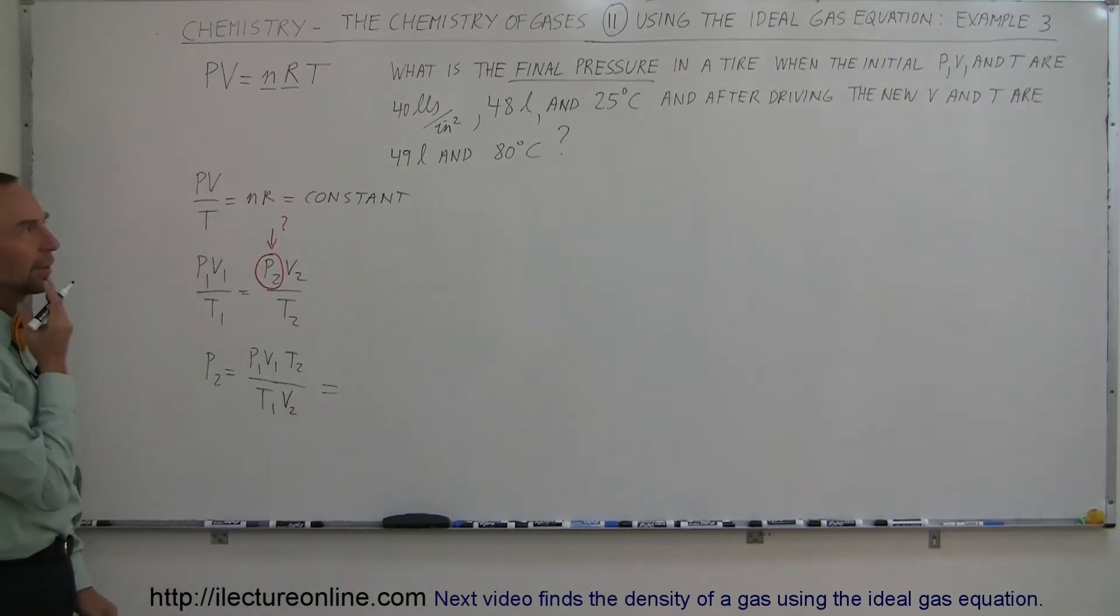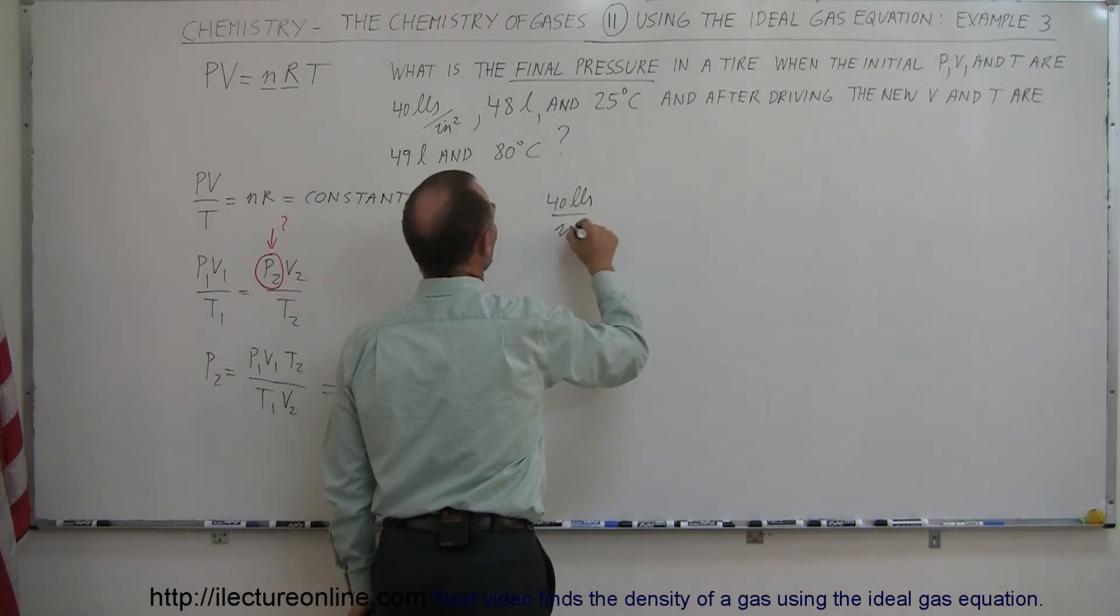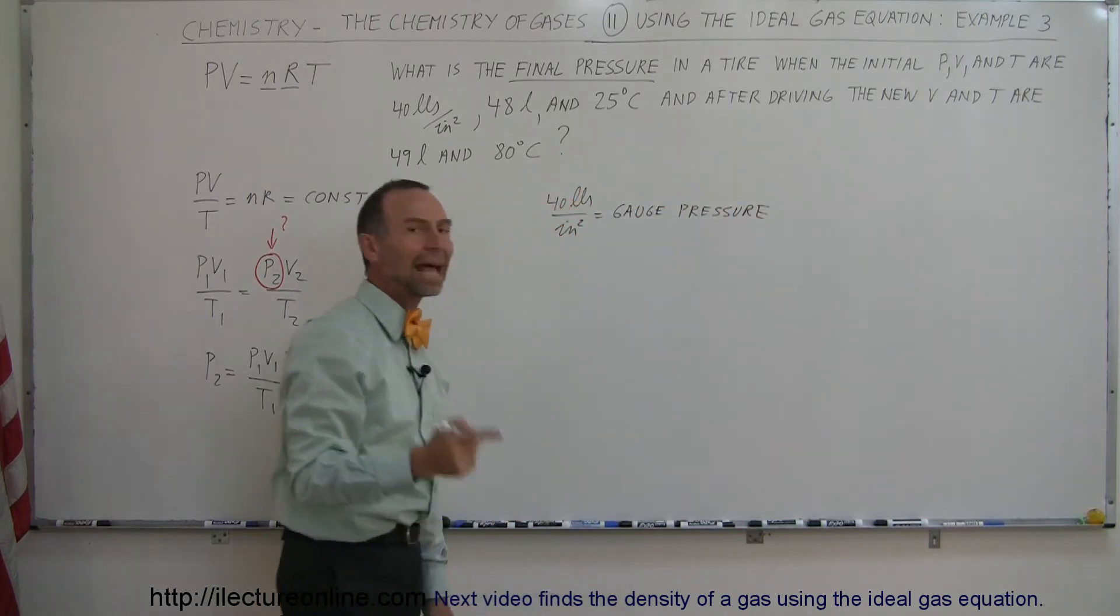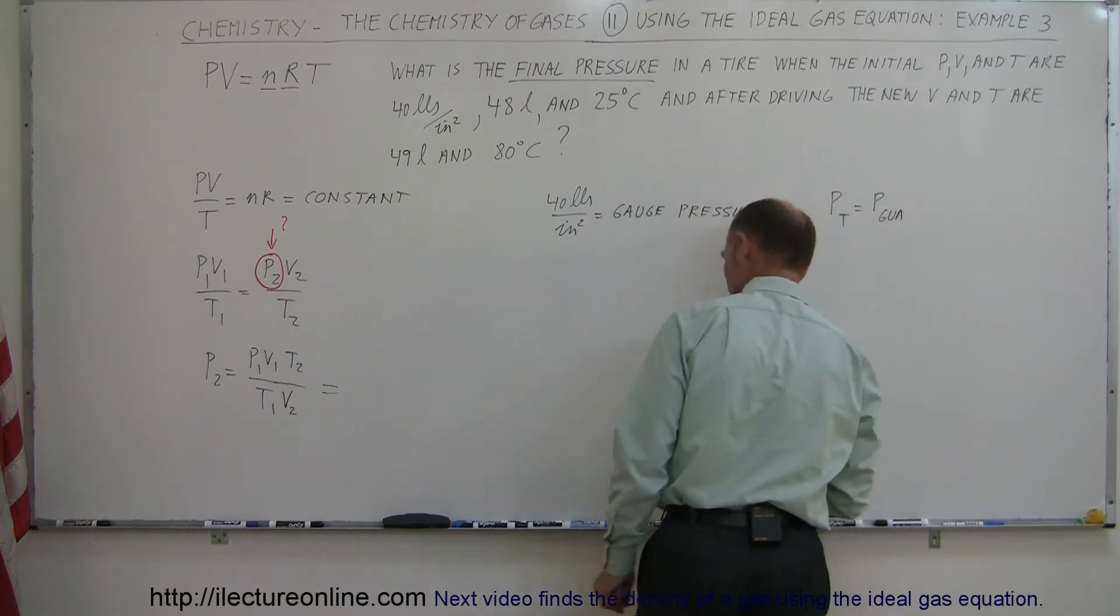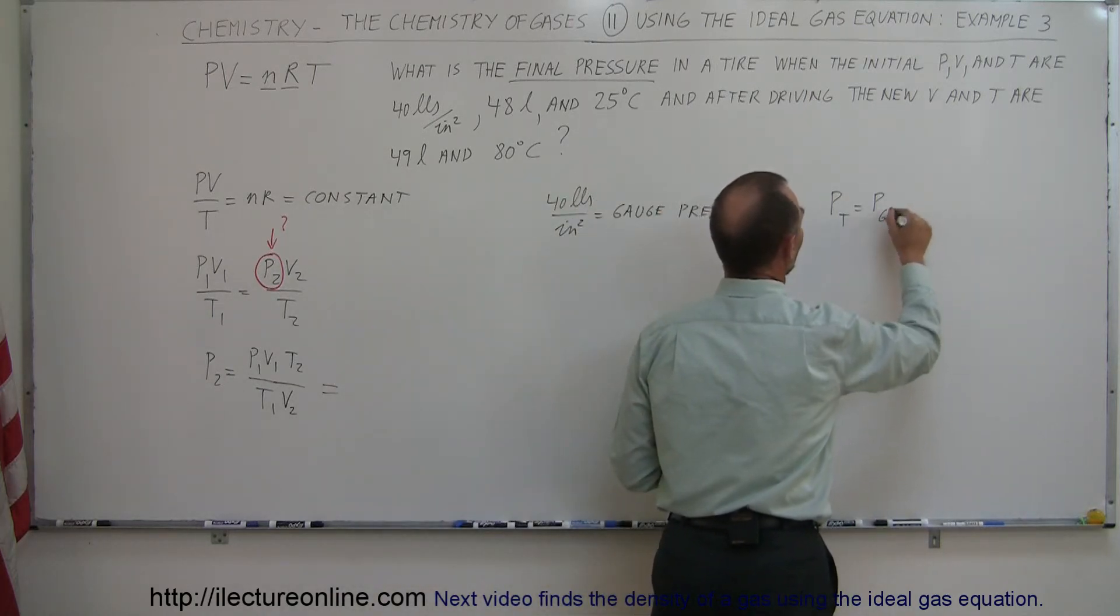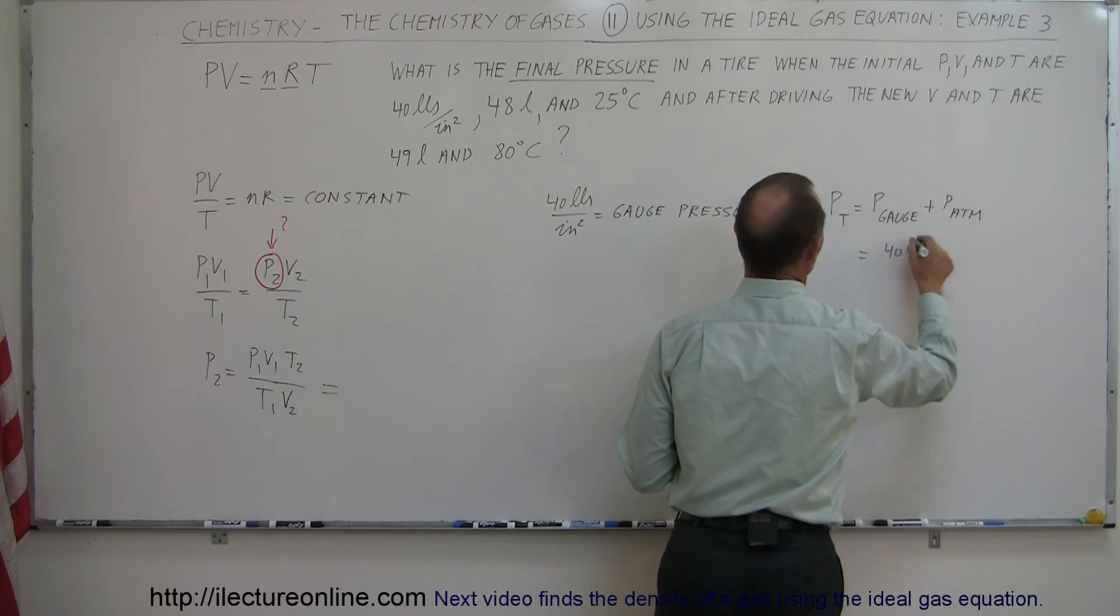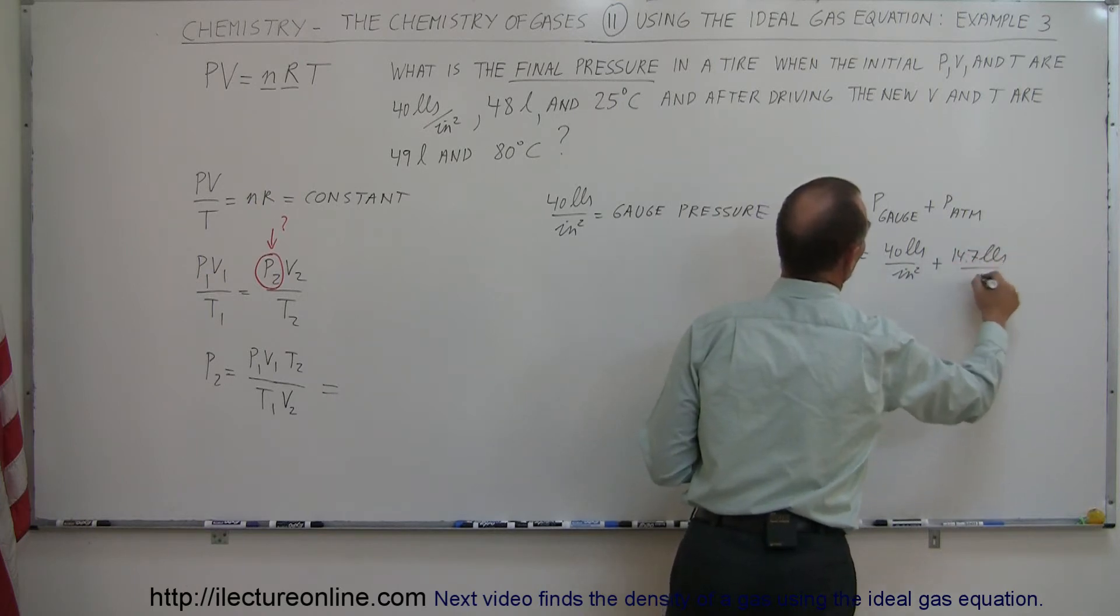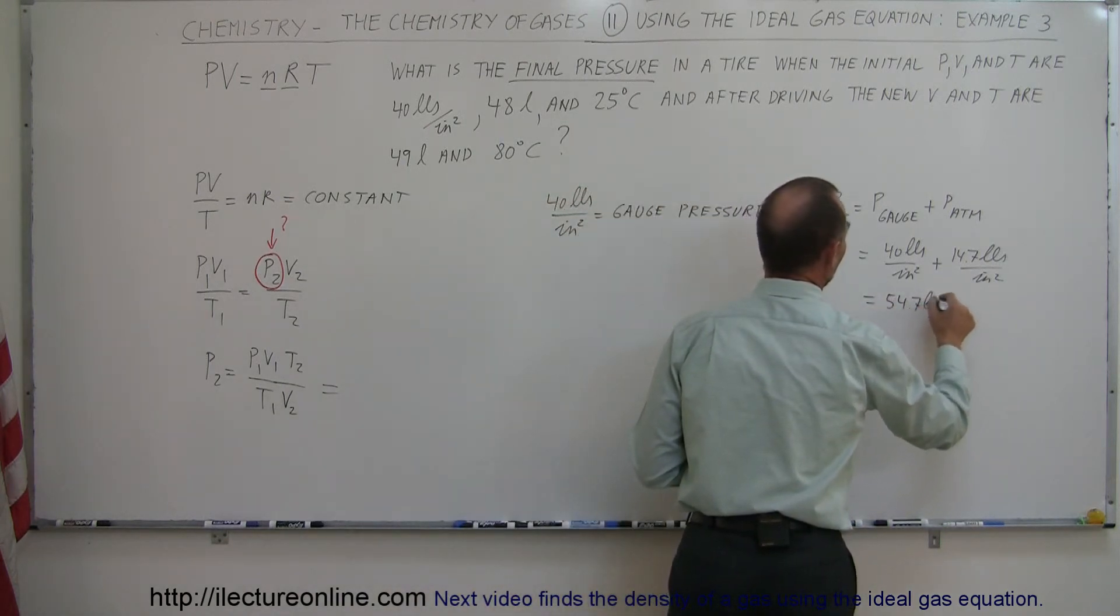First of all, pressure one was given to us in pounds per square inch, but that was probably gauge pressure. So they gave us 40 pounds per square inch, which is gauge pressure, which is not total pressure. So to find the total pressure in the gas, we have to add atmospheric pressure. So that means pressure total is equal to gauge pressure plus atmospheric pressure. So in this case, that would be 40 pounds per square inch plus 14.7 pounds per square inch.